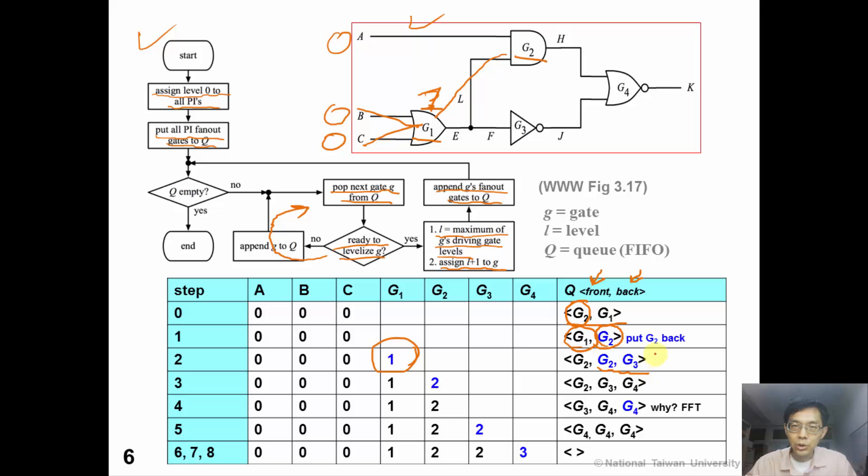So we have G2 and G3 in the queue. So the next gate we pop out from the queue is G2. Now G2 is ready for levelization, since both A and G1 has been levelized. So the level of G2 is now assigned to the maximum of A and G1 plus one, which is two. And we append the fanout of G2 to the queue, which is G4.